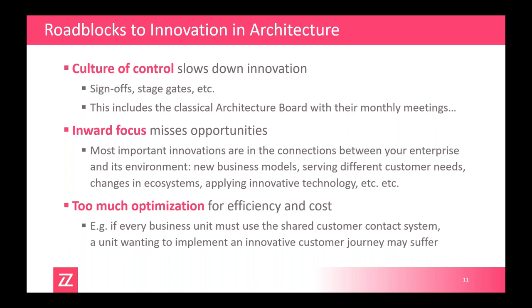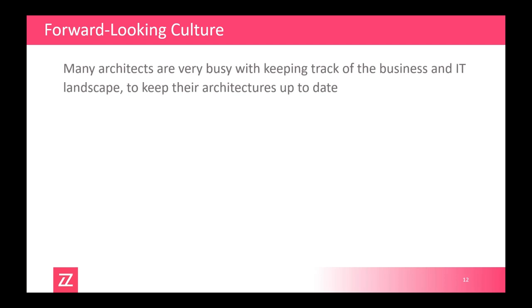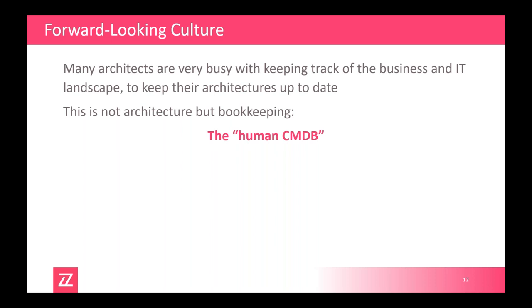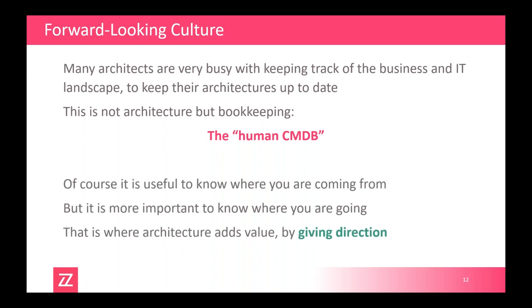Many architects are rather busy looking at their current state, keeping architectures up to date — and I would say that is not architecture, but bookkeeping. As an architect you shouldn't be the human CMDB that just tries to keep models in good shape. Architecting is about giving direction and the future. Of course you can't give direction if you don't know where you're coming from, but it's not the most important thing you do. If you can, try to automate current-state capture using modern technology that harvests data from network and applications, and import that into your architecture.